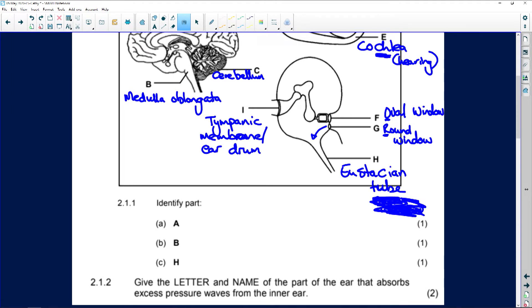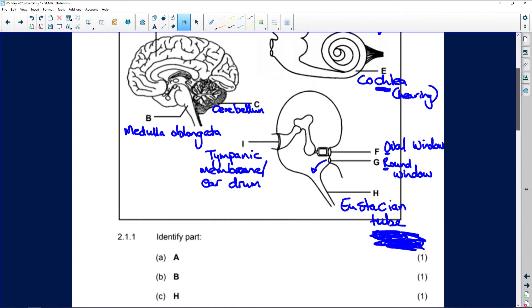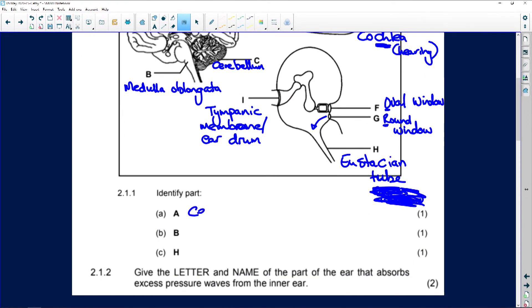Now identify part A. A, if I remember correctly, was the cerebrum. And it doesn't matter if you're now writing it twice. It doesn't matter. You need to do this part so that you can understand what it is you're going to be answering. B is the medulla. And you can't just call it the medulla. It's the medulla oblongata. Medulla means middle. So you can't just say it's the middle. It's the medulla oblongata.